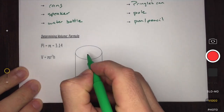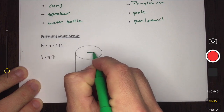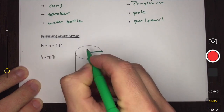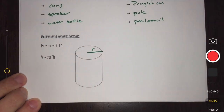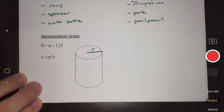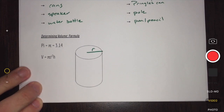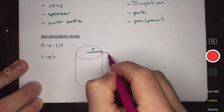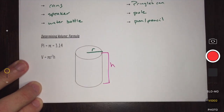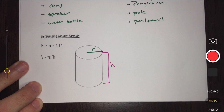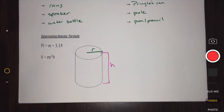On my cylinder, I have to make sure that I identify a couple of measurements: the radius of my circle, and the height of my cylinder. Once I have both of those variables, finding the volume is fairly straightforward.